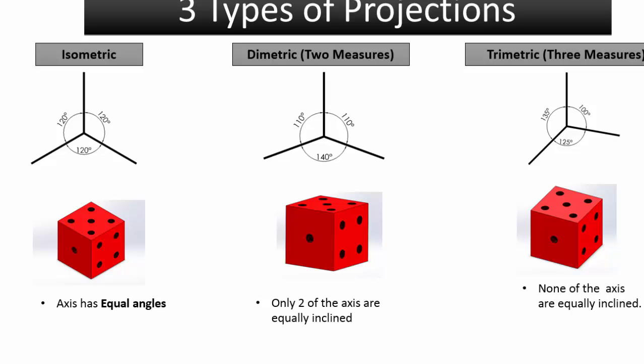Isometric has all equal axis angles and gives the same view every time. In dimetric, only two internal angles are equal. And finally, in trimetric, none of the angles are equal.